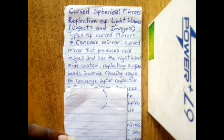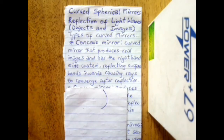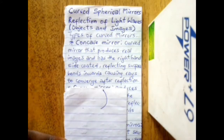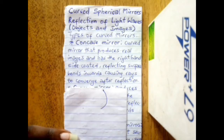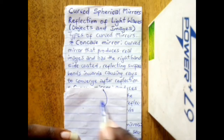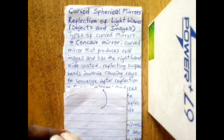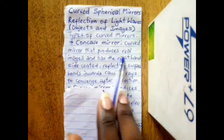By real images we mean images that can be produced on a photographic screen — images where rays of light are incident and reflected. We'll come to see the differences between real and virtual images. Real images have their points of intersection.